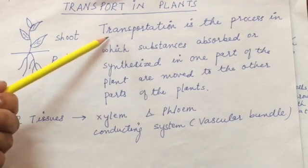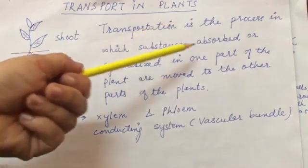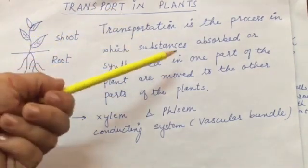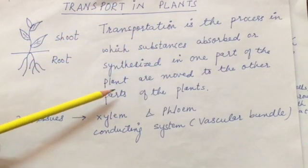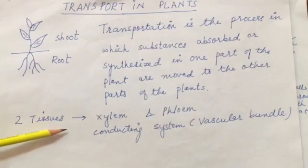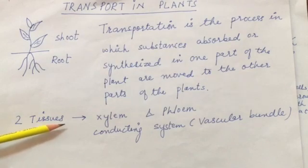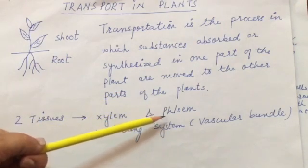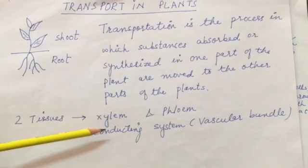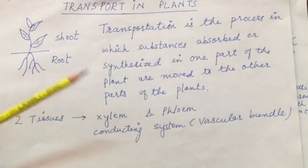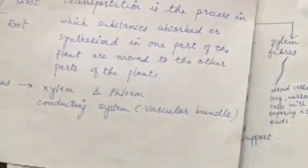Transportation is the process in which substances absorbed or synthesized in one part of the plant are moved to the other parts of the plant. There are two tissues responsible for the transport system in plants: xylem and phloem. They form the conducting system of the plant, and are together known as vascular bundles or vascular tissues. Now let us study about xylem in detail.